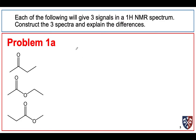The first problem was to construct some spectra for three compounds. Each of these compounds will give three signals in a proton NMR. Each has an isolated methyl group — that is, a methyl group that will give a singlet — and they also have ethyl groups. An ethyl group has a CH2 bonded to a CH3, so we expect to see a quartet and a triplet.